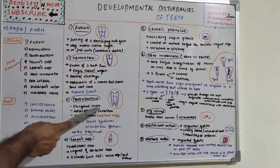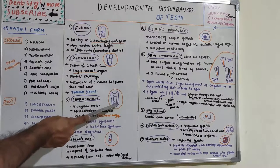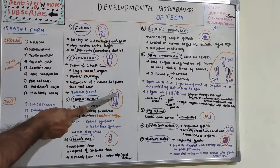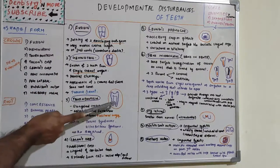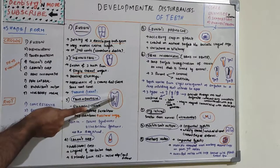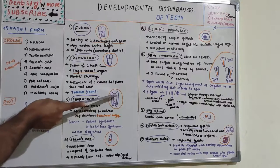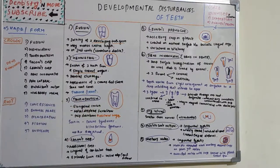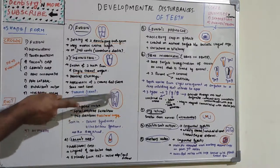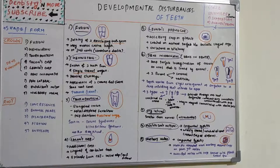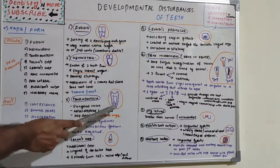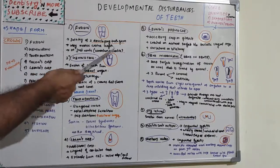Taurodontism is a variation in tooth form characterized by an elongated crown and apically displaced furcation. The pulp chamber is also very elongated, resulting in an increased apical-occlusal height of the pulp chamber. It is most commonly seen in Down syndrome and Klinefelter syndrome, and basically does not require any treatment.